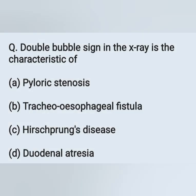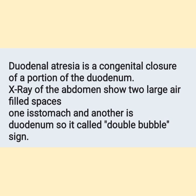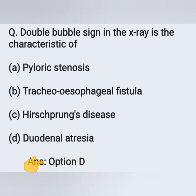Double bubble sign on X-ray is characteristic of: Option A: pyloric stenosis. Option B: tracheoesophageal fistula. Option C: Hirschsprung's disease. Option D: duodenal atresia. In the case of duodenal atresia, we can see the double bubble sign. Duodenal atresia is a congenital closure of a portion of the duodenum. X-ray of the abdomen shows two large air-filled spaces — one in the stomach and the other in the duodenum — called the double bubble sign. Option D is the correct answer.